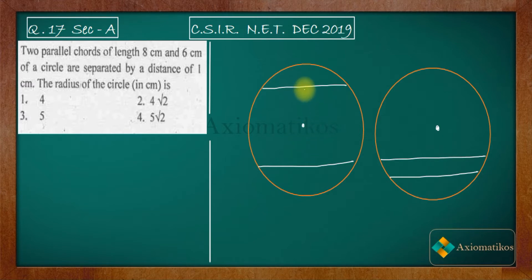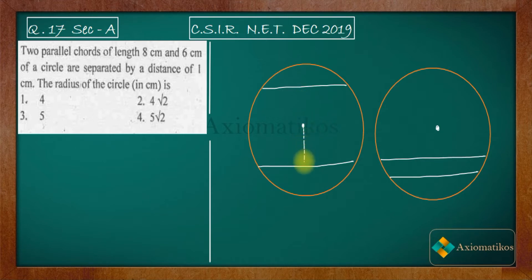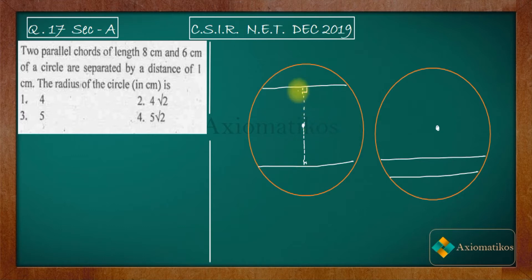It is given that the distance between the chords is 1 centimeter. Now, because these two chords are parallel, if I drop a perpendicular from the center to one chord, that same perpendicular line extends to the other chord as well — it is a single straight line, not tilted, because the two chords are parallel to each other. So this distance is 1 centimeter.